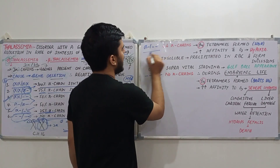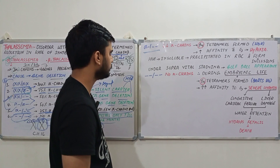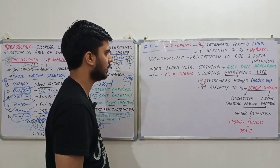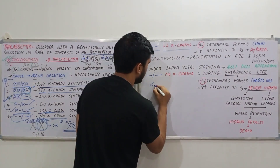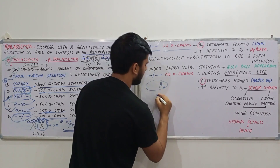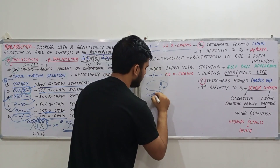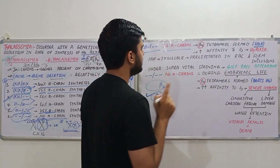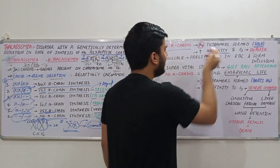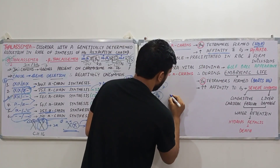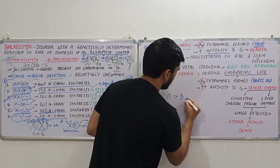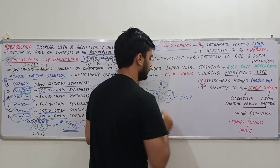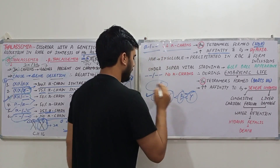In the three-gene deletion case, there is decreased alpha chain synthesis — only 25% of alpha chains are formed. Normally we have two alpha and two beta, but if alpha is absent, beta chains form a tetramer: a beta-4 molecule, also known as HbH. An important feature of HbH is its very high affinity for oxygen. Generally, alpha chains have the least affinity, beta chains have intermediate affinity, and gamma chains have the highest affinity.